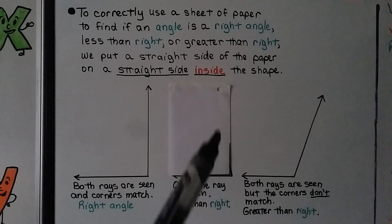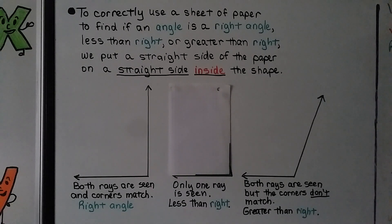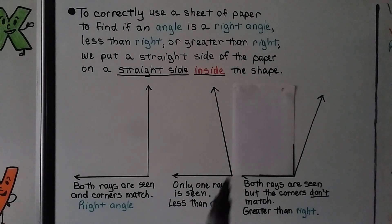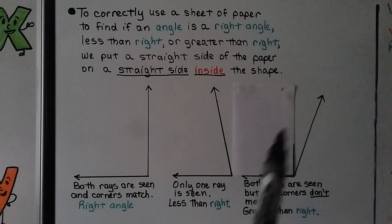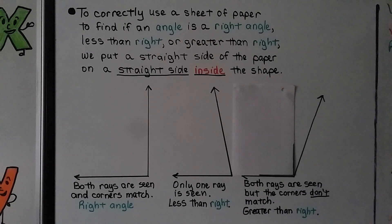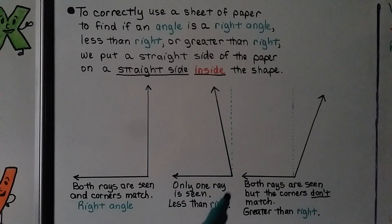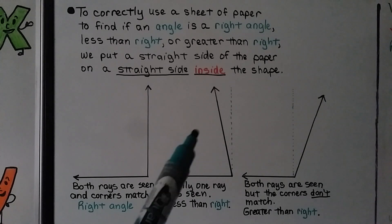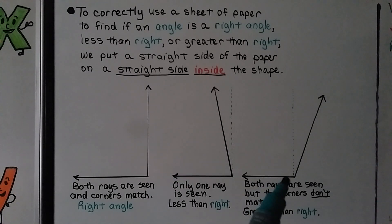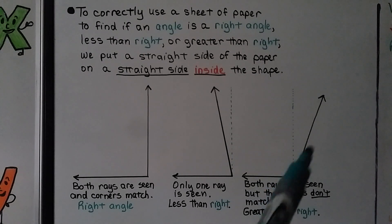It's smaller — not as open as the corner. When we put the flat side of the paper on this ray, we can see this ray, but this one is going way out, so it's more open than a square corner — greater than a right angle. Our dotted line would have been a right angle, and we can see the angle is less than or greater than accordingly.